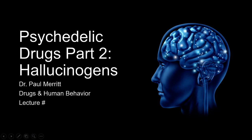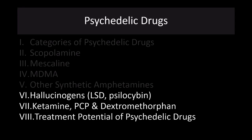Welcome to lecture number 21. This is the second part of my lecture on psychedelic drugs. The last lecture focused on MDMA, mescaline, scopolamine, and related drugs. In this lecture, I'm going to focus on hallucinogenic compounds. In particular, we'll talk about LSD and related compounds such as psilocybin, and spend some time talking about their potential therapeutic uses. We'll also discuss ketamine, PCP, dextromethorphan, and treatments for these kinds of drugs.